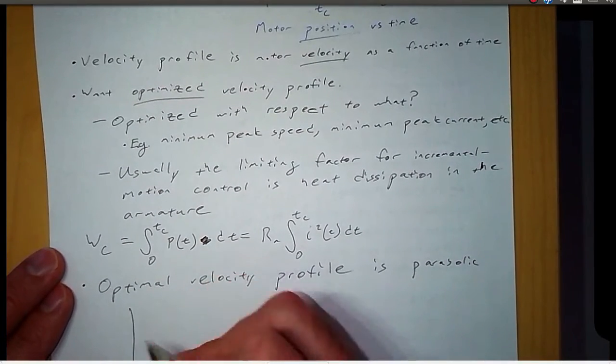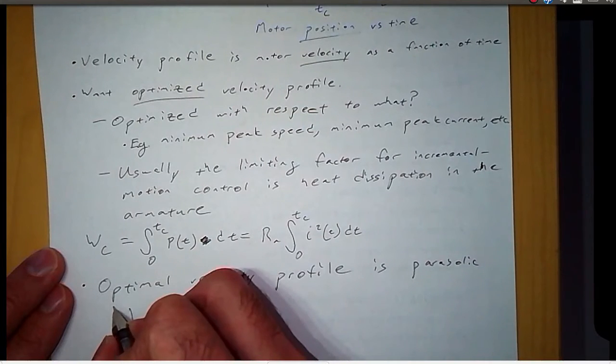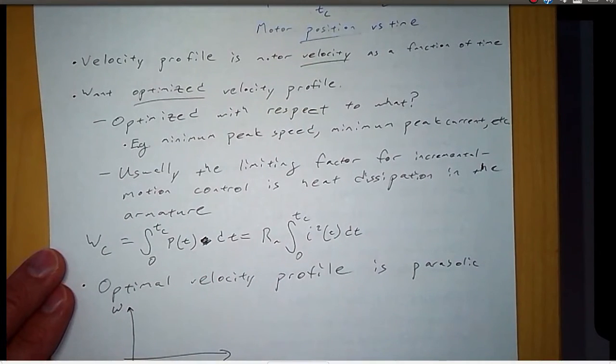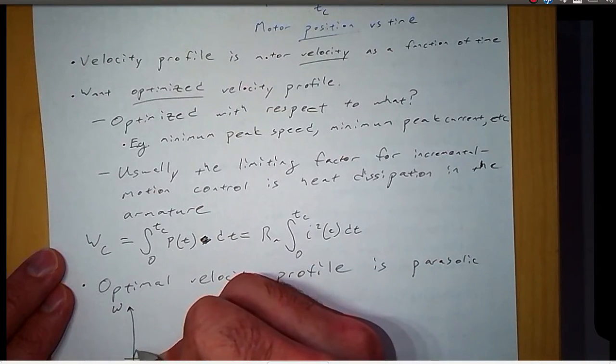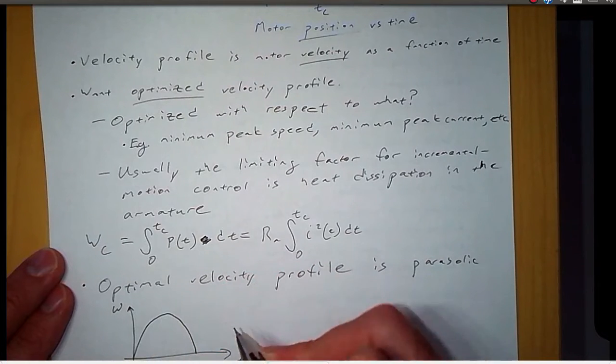So now, if we look at the velocity profile, again, that's omega, not theta. So we're looking at the velocity as a function of time. Then, as I said, it's parabolic.